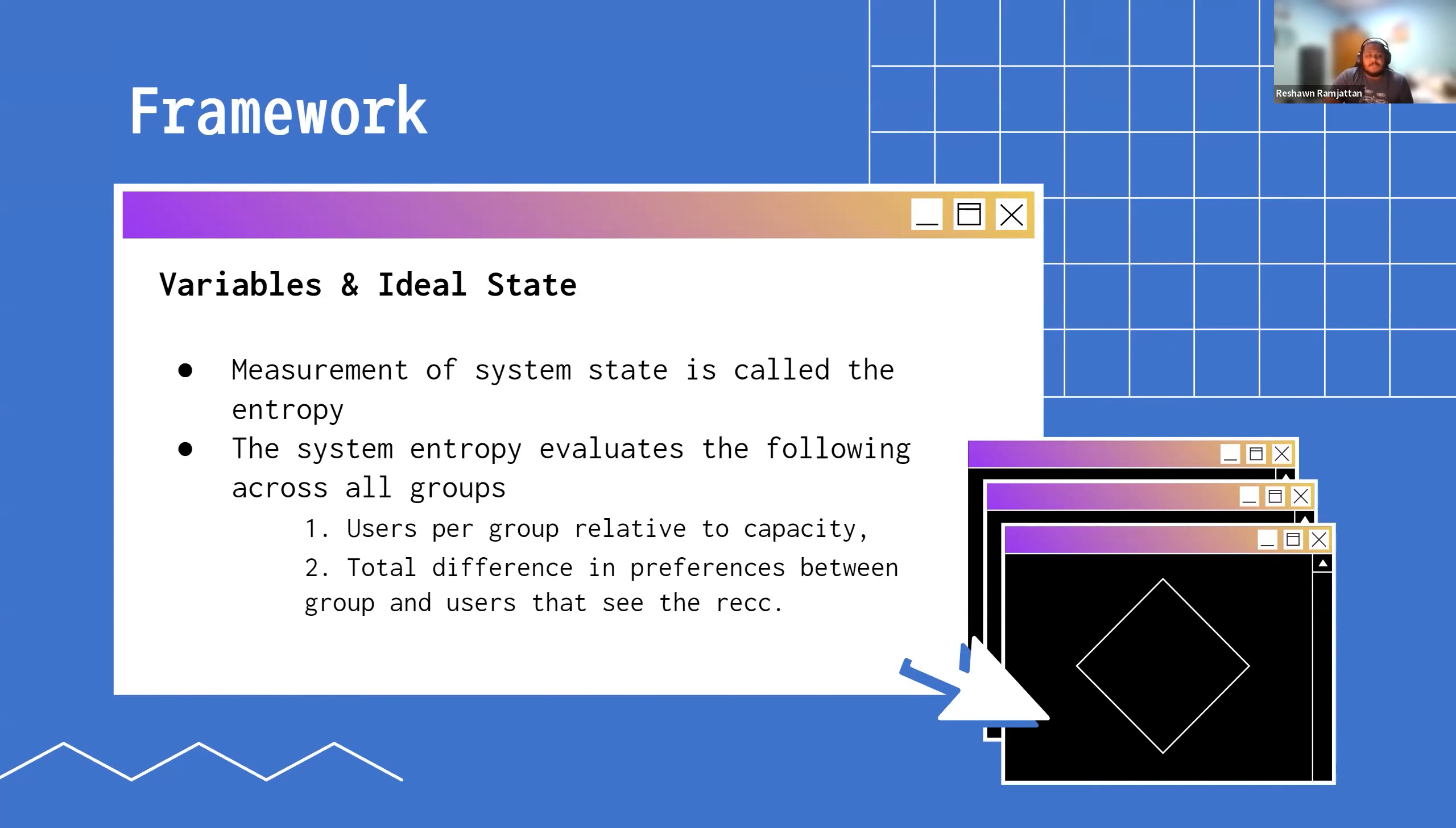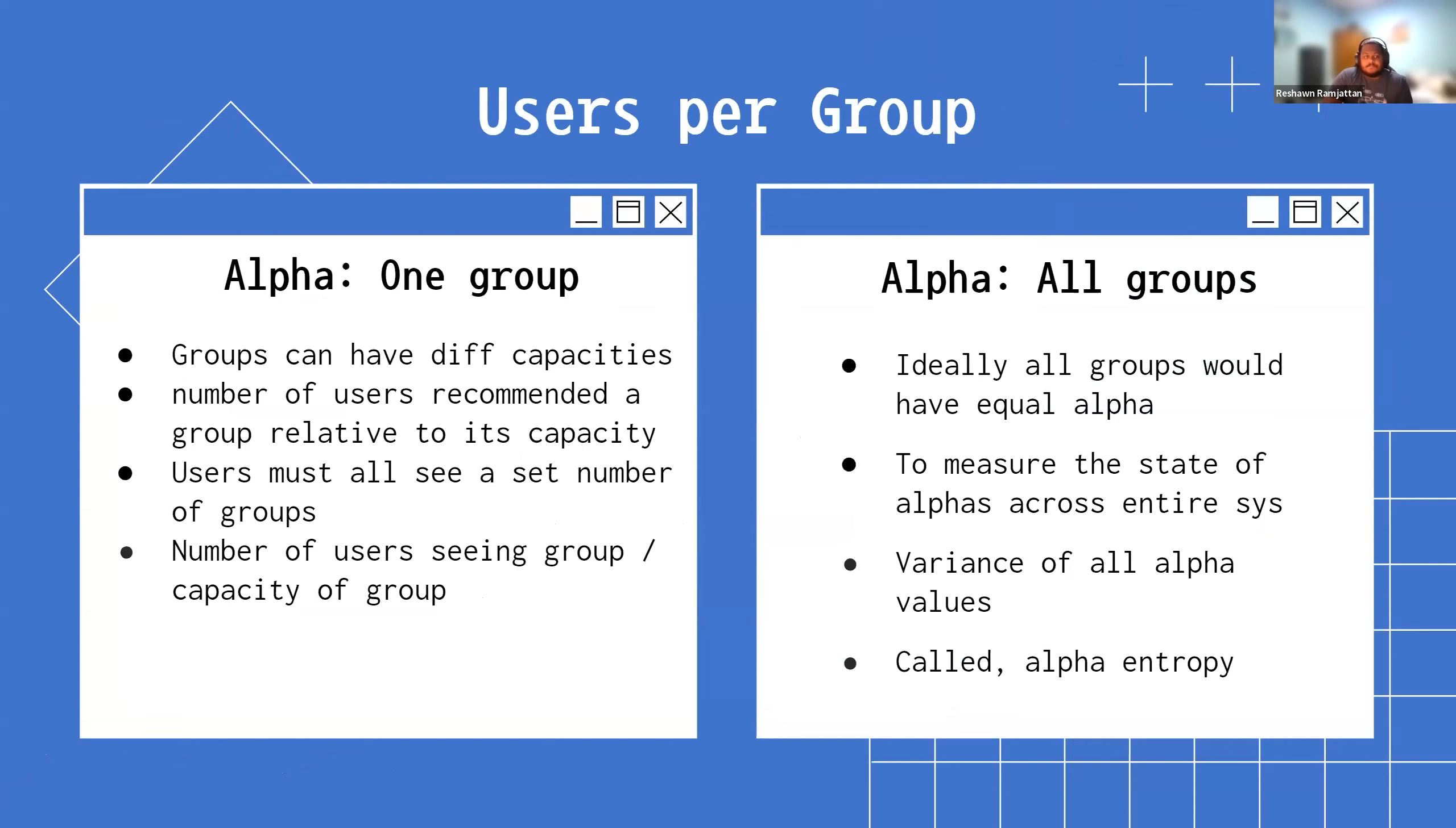The two main things we're looking at here are the spread of users in terms of recommendations and groups, and the quality of the matches within that spread. For the users per group, this is important because let's say we have a group that can hold up to 20 people but 200 people are a great match for it. At the same time, what if we have a group that has 200 people possible but only 20 people are looking at it? That doesn't really make sense. It just creates extra work for one group host and the other one kind of just has a poorer experience. So we want to balance this by using a value called alpha. If we look at one single group, alpha would be the number of users seeing that group divided by the capacity of the group. Then we calculate the alpha value for the entire system by looking at the variance of all the alpha values across all groups.